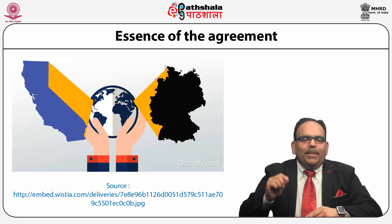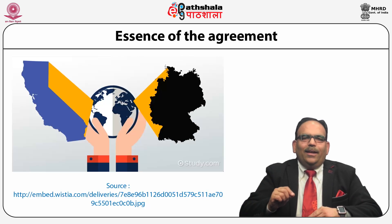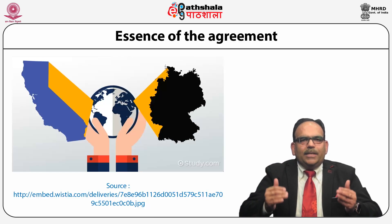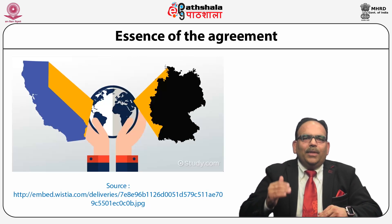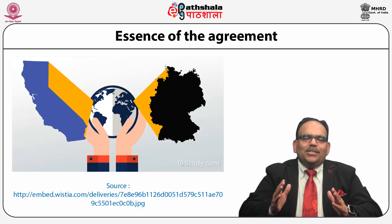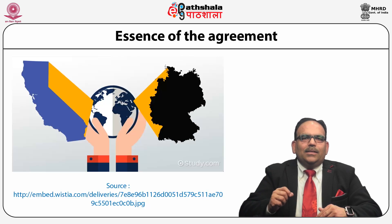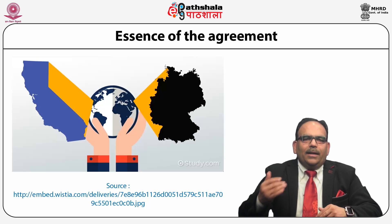Number 1: the bank must receive a fee for issuing the letter of credit. Number 2: the letter of credit must contain a specified expiration date or definite maturity. Number 3: it must specify a stated maximum amount of money to pay. Number 4 and 5: the bank's obligation must arise only on presentation of specified documents, and the customer's unqualified obligation to reimburse the bank on the same conditions as the bank has paid.